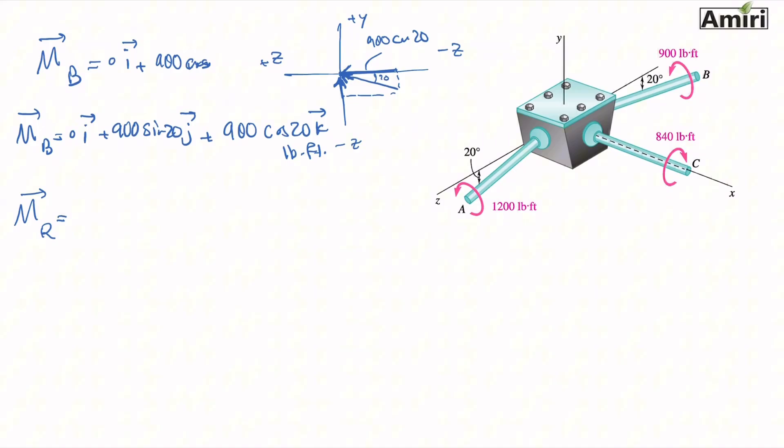Adding all of these together, adding all the i's together, two of them are zero, so all I have is minus 840i. Adding all the j's together, I'm going to get minus 102.6j. Adding all the k's together, I have 1973.35k, the units are pound-foot. So this is my equivalent moment that the problem was asking me to find.